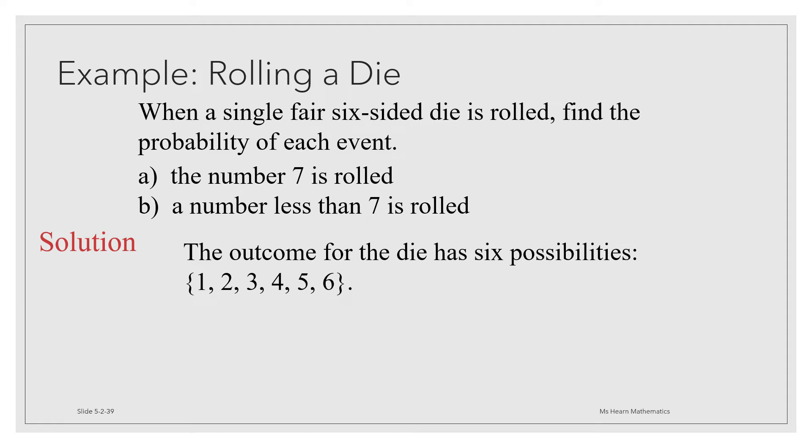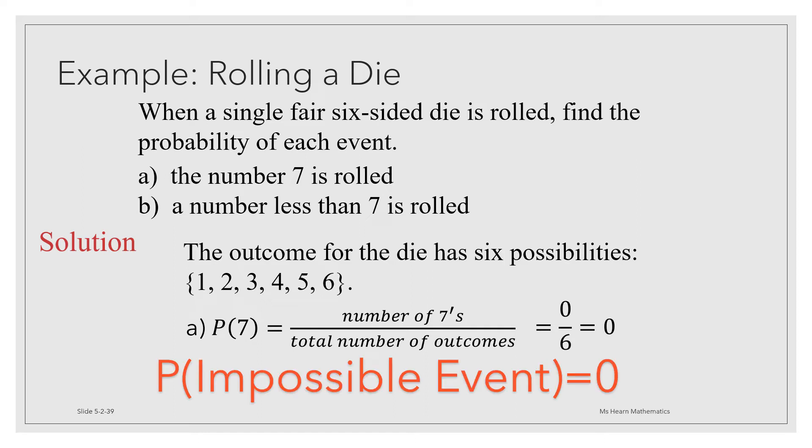Knowing that the outcomes for the six-sided die are 1, 2, 3, 4, 5, and 6, we calculate the probability of a 7 by taking the number of 7s, or favorable outcomes, divided by the total number of outcomes. There are 0 sevens and 6 outcomes. 0 divided by 6 is 0. So here we see that the probability of an impossible event does turn out to be 0.